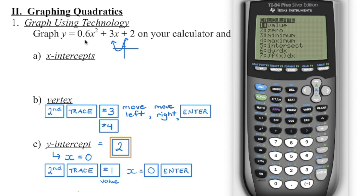Based on this standard form, we already know the y-intercept is positive 2. We also know that because the a-value is positive, the parabola is going to be opening up. If a parabola opens up, we have a minimum — this is the lowest point on that parabola. So because it opens up, I'm going to choose number 3, minimum. We're going to get the vertex next, working from the bottom to the top.